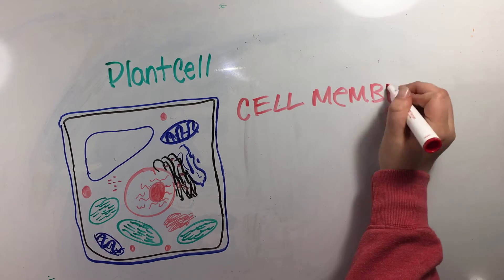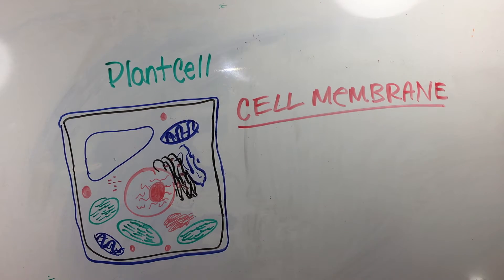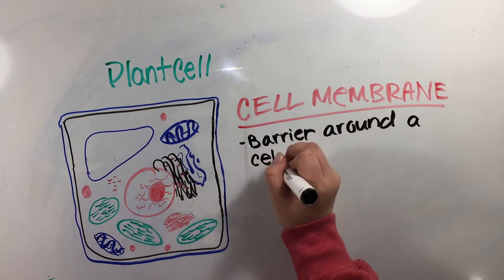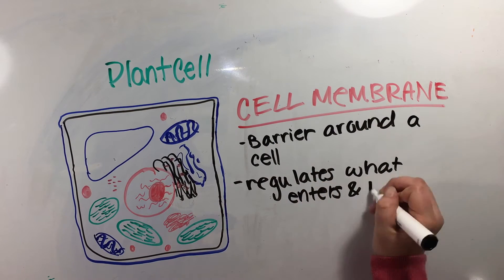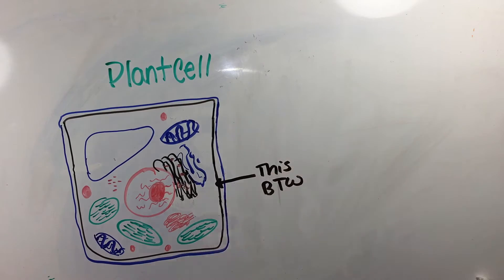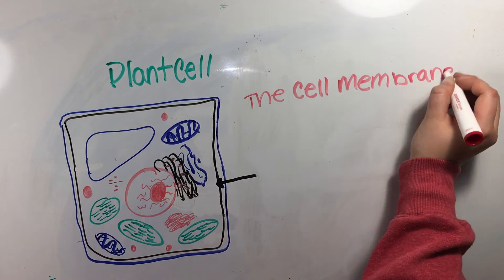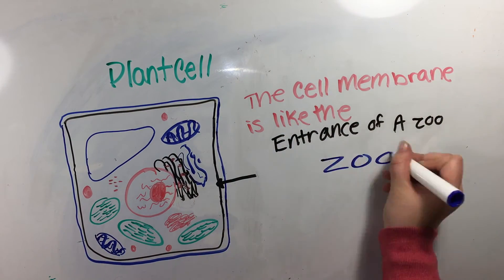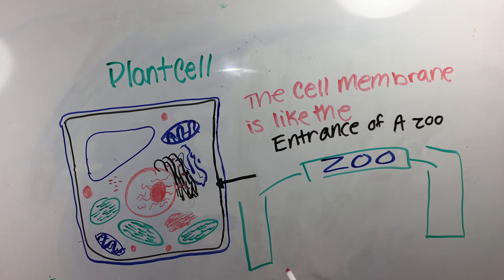The cell membrane is the barrier around a cell and helps regulate what enters and leaves the cell. It's like the entrance at a zoo since it's accessible to pass through, except it only lets visitors enter at certain times while restricting them at others.